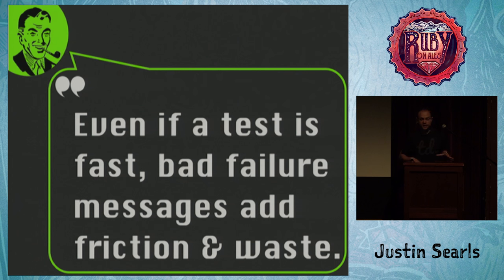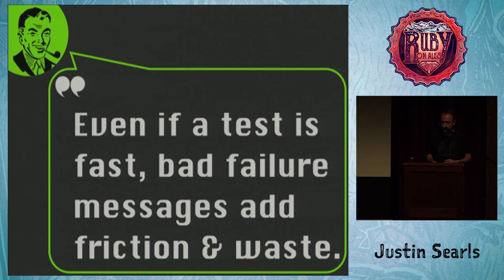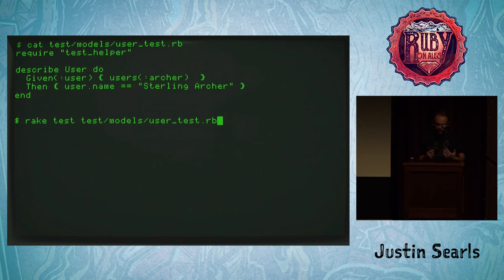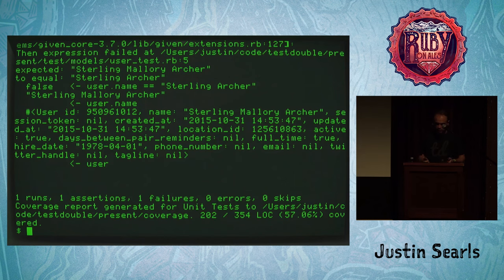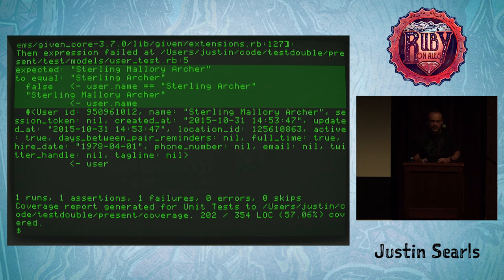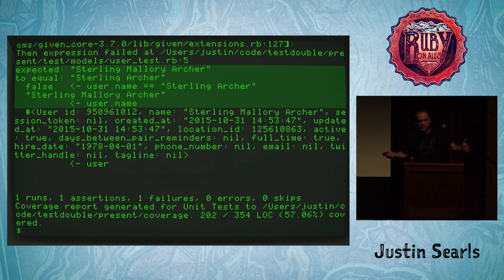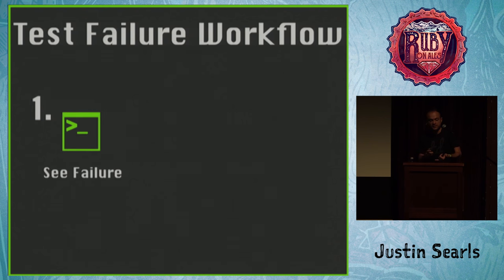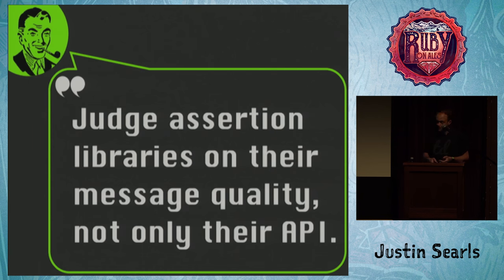You might brag about how fast your test suite is, but if you have really bad error messages, all that time you're saving in speed might be going into analysis whenever any test fails unexpectedly. A different test using rspec-given: even though I'm just saying `user.name == 'Sterling Archer'`, when I run the test I'll get a better message — 'Sterling Mallory Archer didn't equal Sterling Archer.' I can see the comparison right next to each other. And what's cool is rspec-given will continue invoking both sides until it doesn't have any callables anymore, printing out the entire user object. Now my workflow is: see the failure, change the code, and then I earn a big juicy promotion because I'm so much faster. Judge assertion libraries not just on how fancy or fluent the API is, but on the quality of the messages they give you.